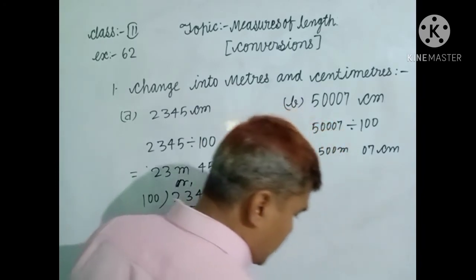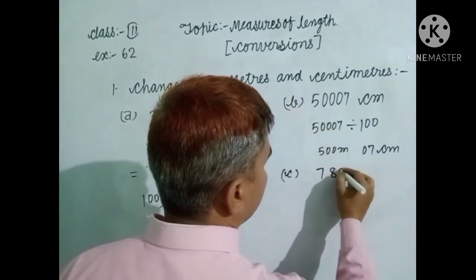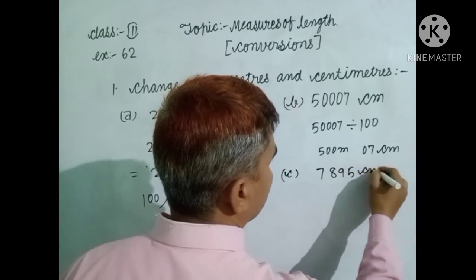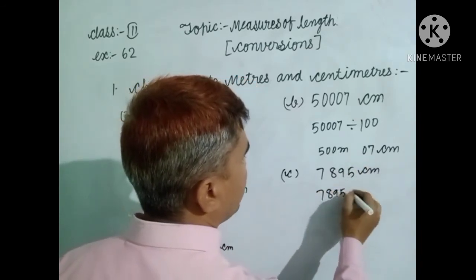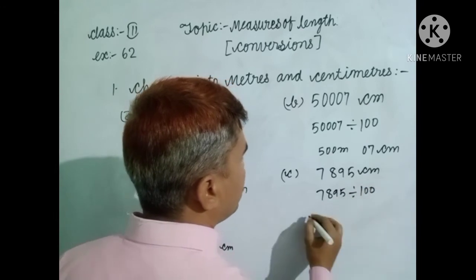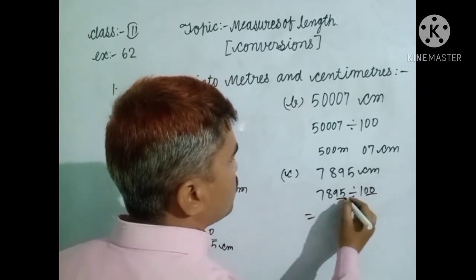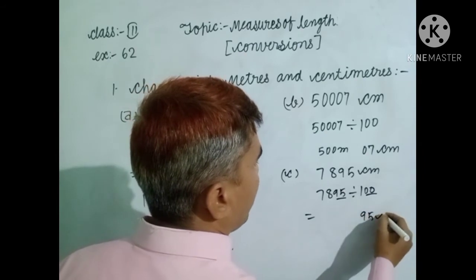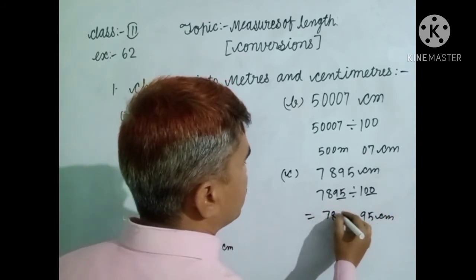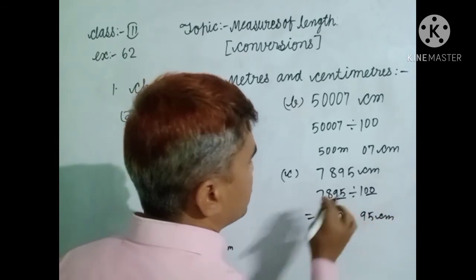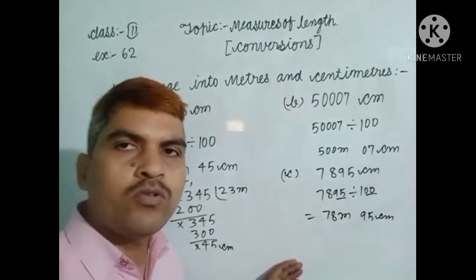Another example: 7895 centimeters converted into meters. 7895 divided by 100 — you take the last two digits as the remainder, so 95 centimeters is the remainder and the rest is the quotient, which is 78 meters. In this way you find out the answer: 78 meters and 95 centimeters.